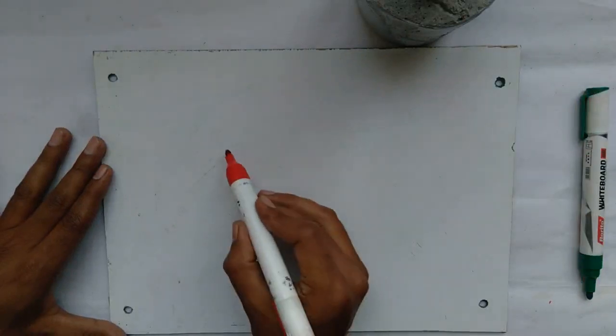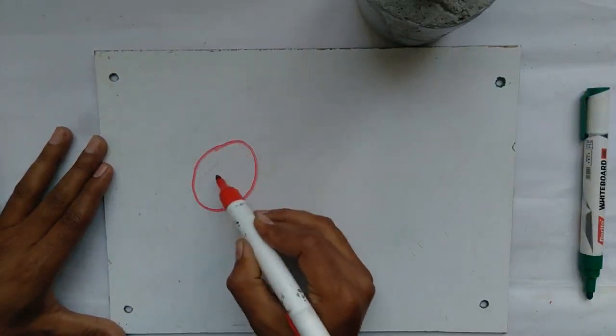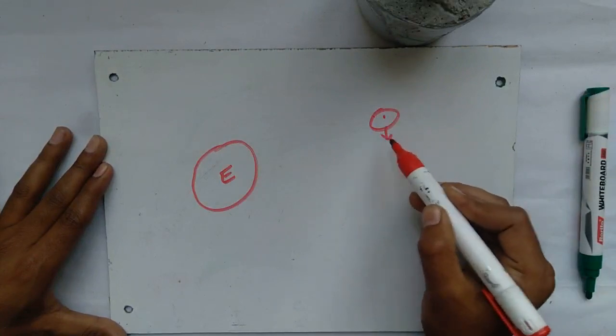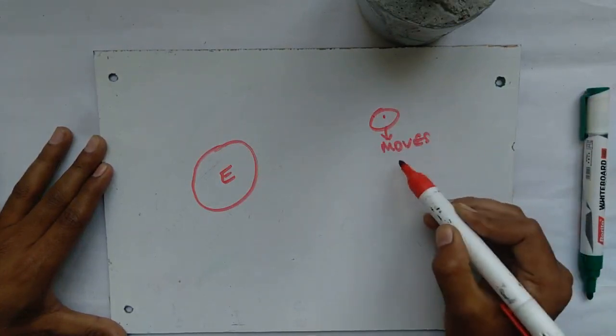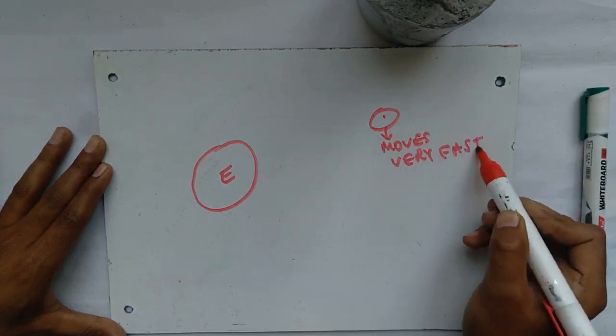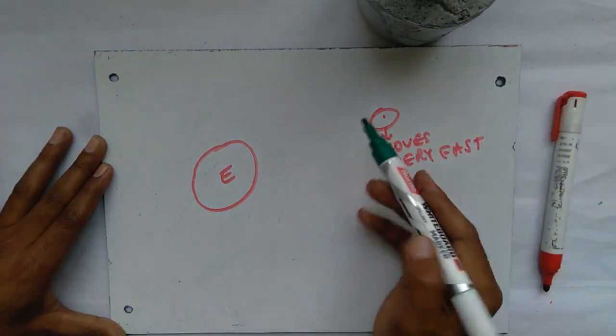This implies that, if the object is very distant, and is moving very fast, then it never hits the earth.